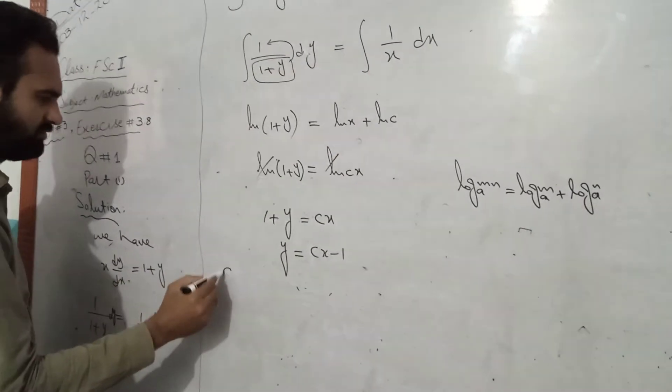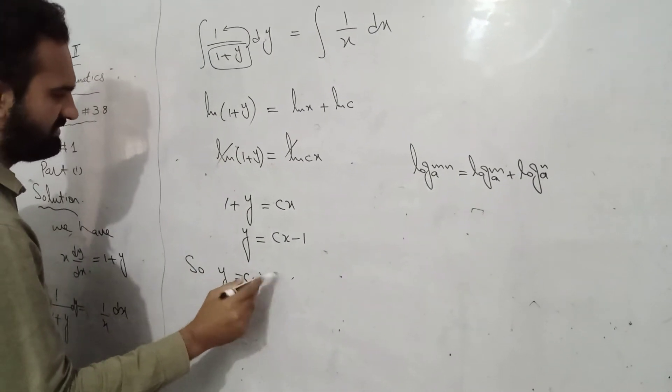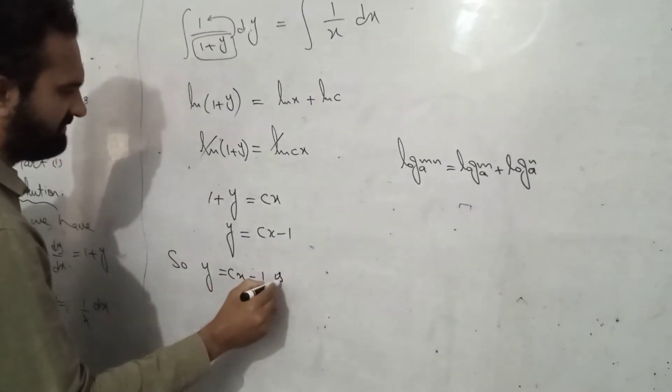1 plus y is equal to Cx and the value of Cx minus 1. So, y is equal to Cx minus 1 is 1.